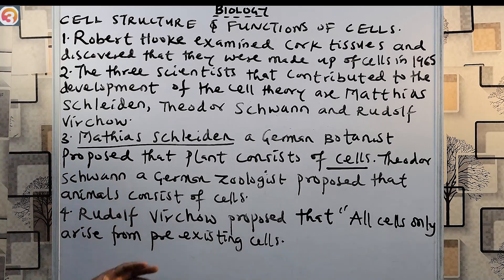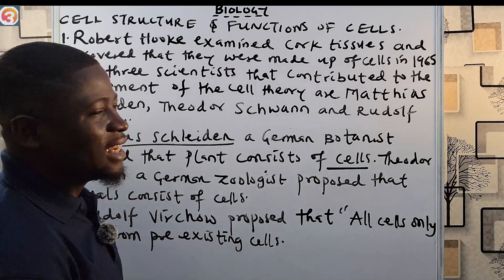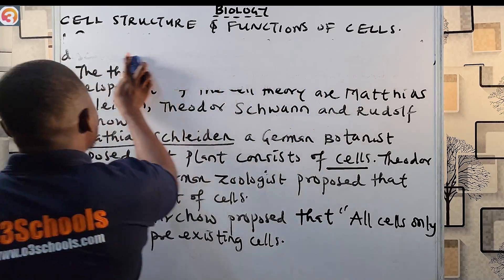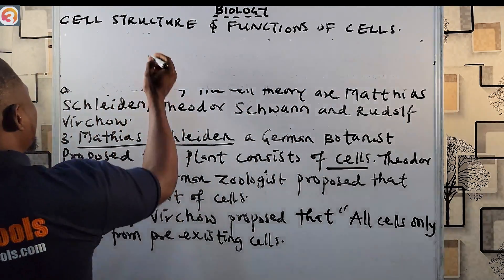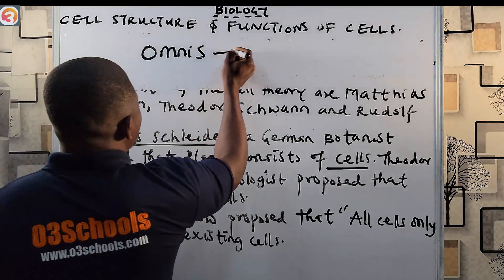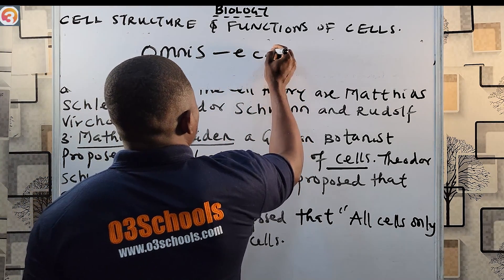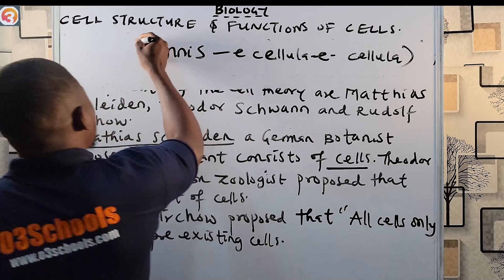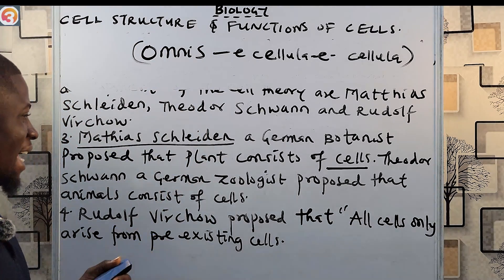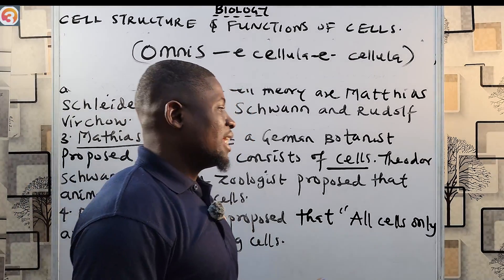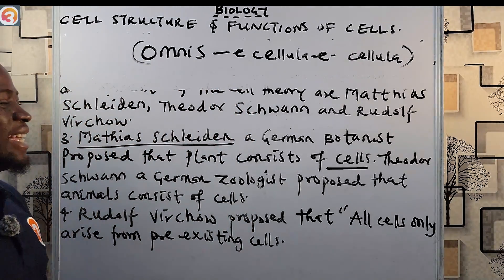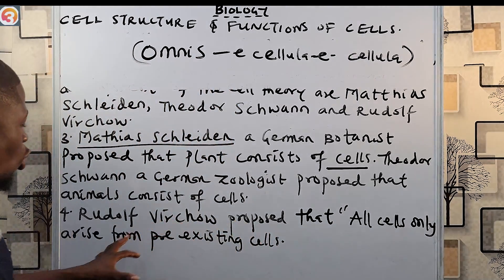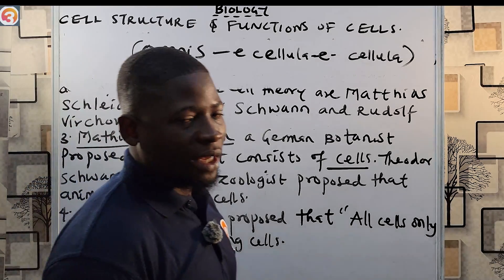Theodor Schwann proposed that animals consist of cells. Rudolf Virchow stated 'Omnis cellula e cellula,' meaning that all cells only arise from pre-existing cells.